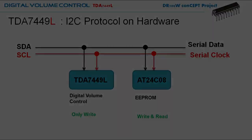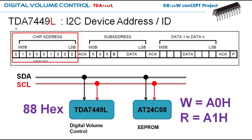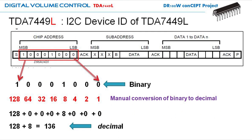In I2C protocol, we identify the slave device with their unique ID. In the datasheet they call it the chip address — device ID or chip address is the same. The TDA7449L comes with an 0x88 hex ID, which is equivalent to binary 10001000, an 8-bit value equivalent to 136 in decimal notation.